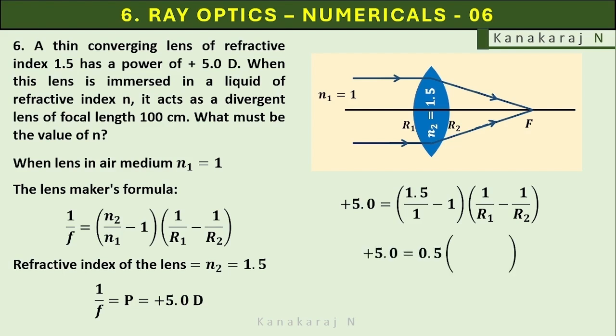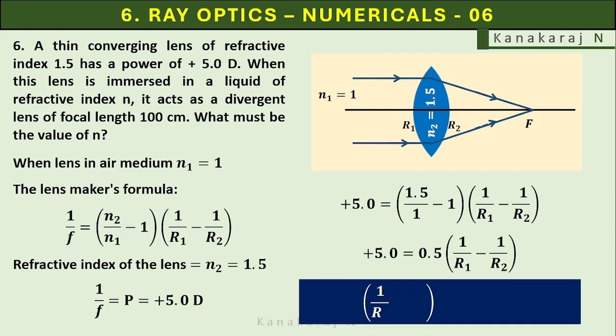Simplifying this, we get plus 5 equals 0.5 multiplies 1 upon r1 minus 1 upon r2. So, 1 upon r1 minus 1 upon r2 equals 5 upon 0.5 equals 10. Let us retain this value for further calculation.